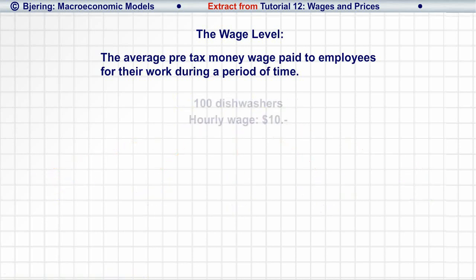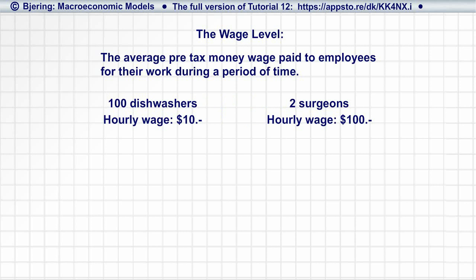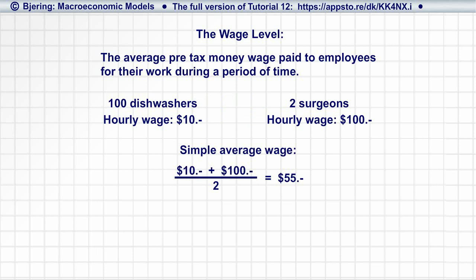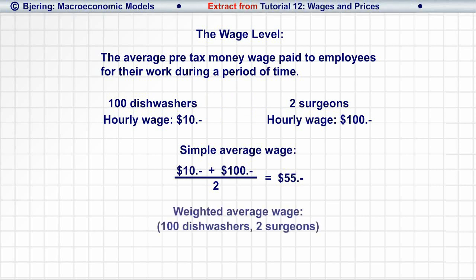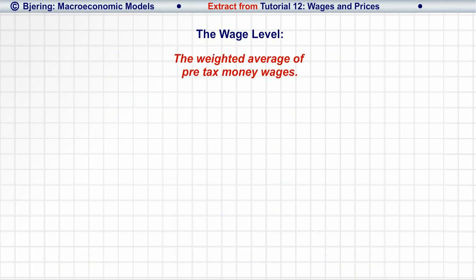To illustrate, assume that there are 100 dishwashers with an hourly wage of $10 and two surgeons with an hourly wage of $100. A simple average of wages is $55, not a very meaningful figure since it doesn't reflect that there are 50 times as many dishwashers with a $10 wage than there are surgeons with a $100 wage. To adjust for this bias, we compute the wage level as a weighted average of money wages, where the weights are the relative share of employees in different pay grades — giving us a wage level of $11.80. So, to sum up, we compute the wage level as the weighted average of pre-tax money wages.